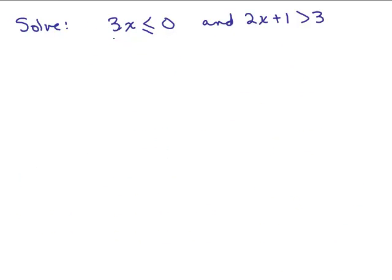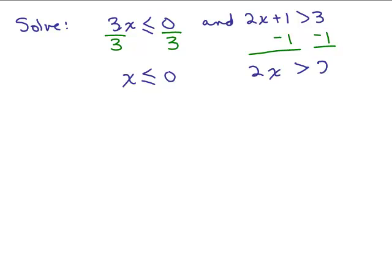Here's the next problem: 3X is less than or equal to 0 and 2X plus 1 is greater than 3. We'll solve each and look for the overlap. To solve 3X less than or equal to 0, divide both sides by 3 — since dividing by a positive number doesn't switch the sign, we get X less than or equal to 0. For the right inequality, subtract 1 from both sides to get 2X greater than 2, then divide by 2 to get X is greater than 1.